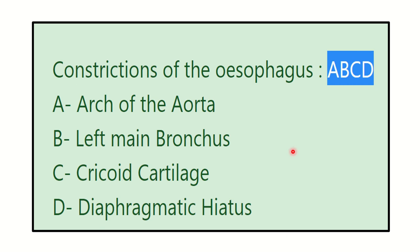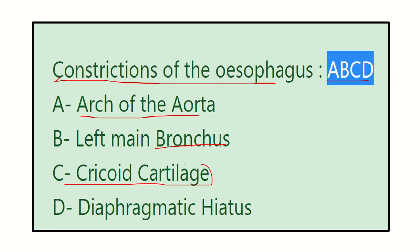A useful mnemonic to remember the constrictions of the esophagus is A-B-C-D: A for arch of the aorta, B for bronchus (left principal bronchus), C for cricoid cartilage (pharyngoesophageal junction, which lies at the cricoid cartilage level), and D for diaphragmatic hiatus.